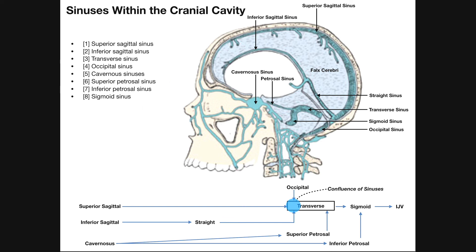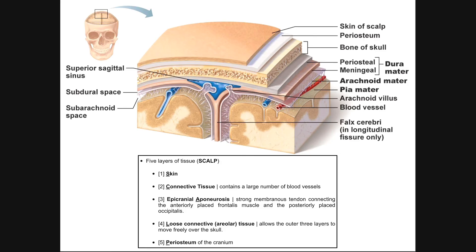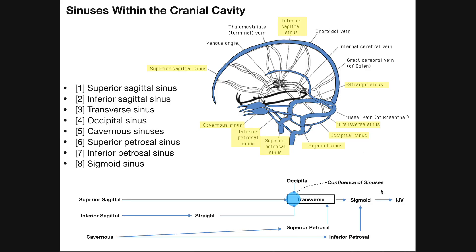All these sinuses are really a way for the brain to get rid of used cerebrospinal fluid — fluid loaded with wastes and depleted of nutrients. That cerebrospinal fluid circulates from the subarachnoid space through the arachnoid granulations into these sinuses, and ultimately drains to the internal jugular vein and back to the venous system.